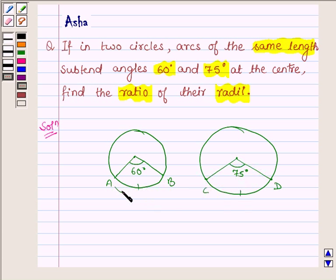And length of both these arcs, AB and CD, are equal. Let them be equal to x centimeter. And let O be the center of first circle and O' be the center of another circle.